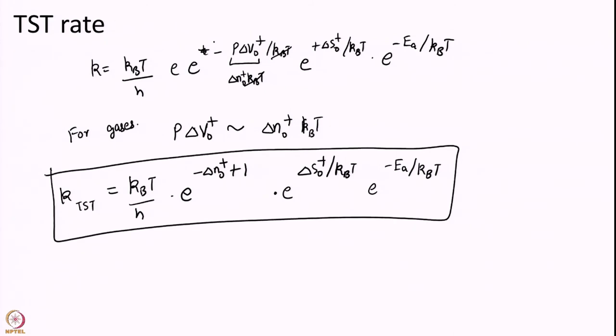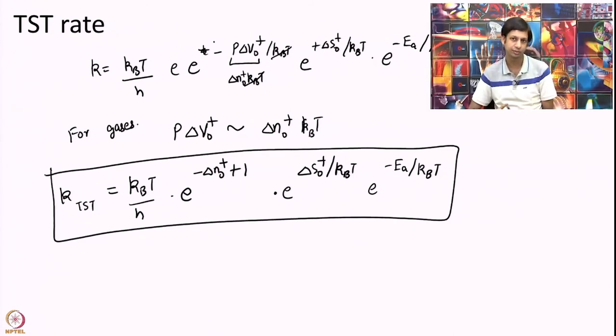So, this is another common relation people often use to calculate rate constants. Here you do not have to calculate partition functions. Here you have to calculate this entropy difference, activation energy and delta N. So, if you can calculate that somehow experimentally then you can calculate the KTST. While partition functions require a bit more rigorous numerical calculation you have to be much more careful with partition functions. It is just an alternate way I am not saying this is the better way but a different way of calculating rate constant.